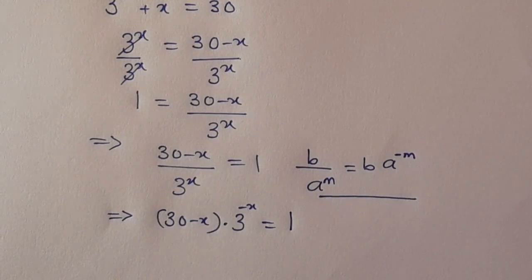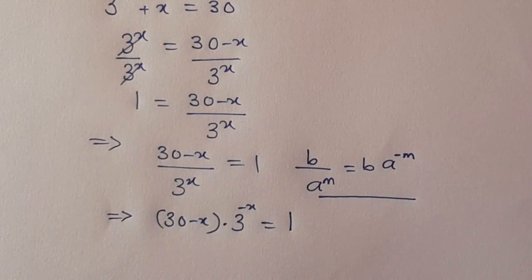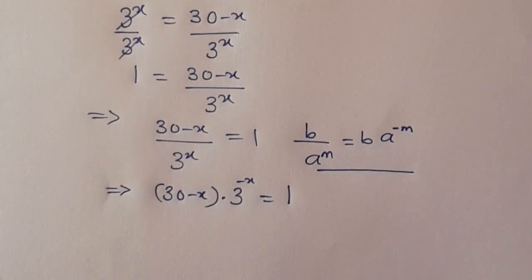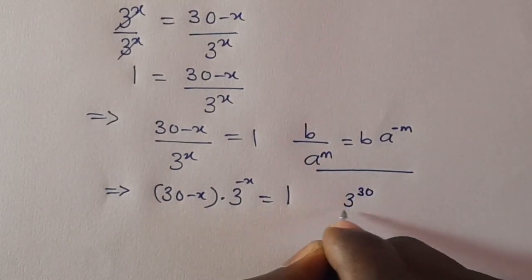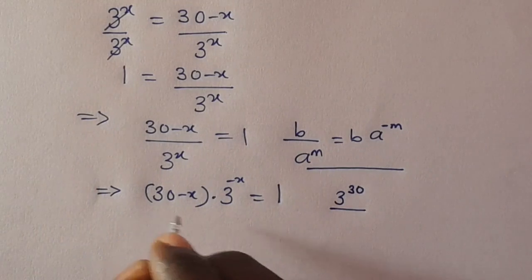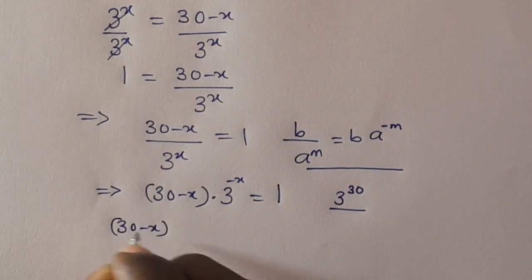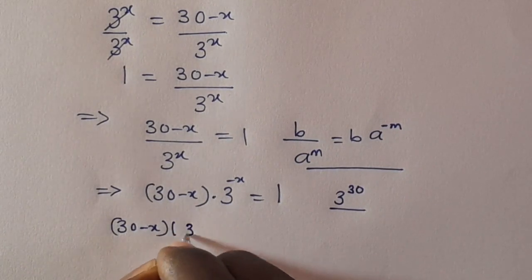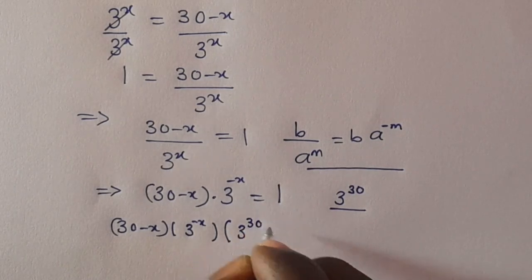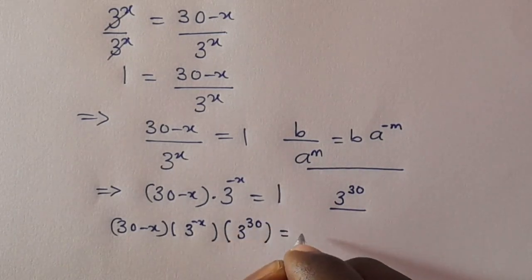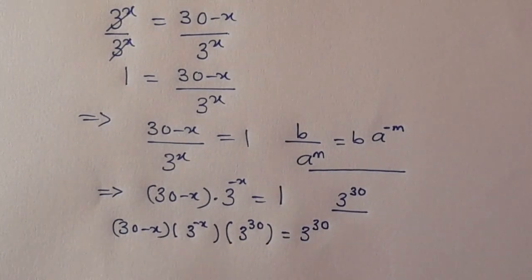If that should be the case, let's do something reasonable. Let's multiply both sides by 3 raised to the power 30. From here we have (30 minus x) multiplied by 3 raised to the power minus x, then multiply by 3 raised to the power 30. The right side will also be multiplied by 3 raised to the power 30, giving us 3 raised to the power 30.